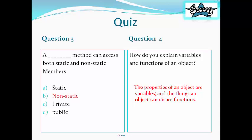The answer to question 3 is non-static. And the answer to question 4 is that the properties of an object are variables and the things an object can do are like functions.